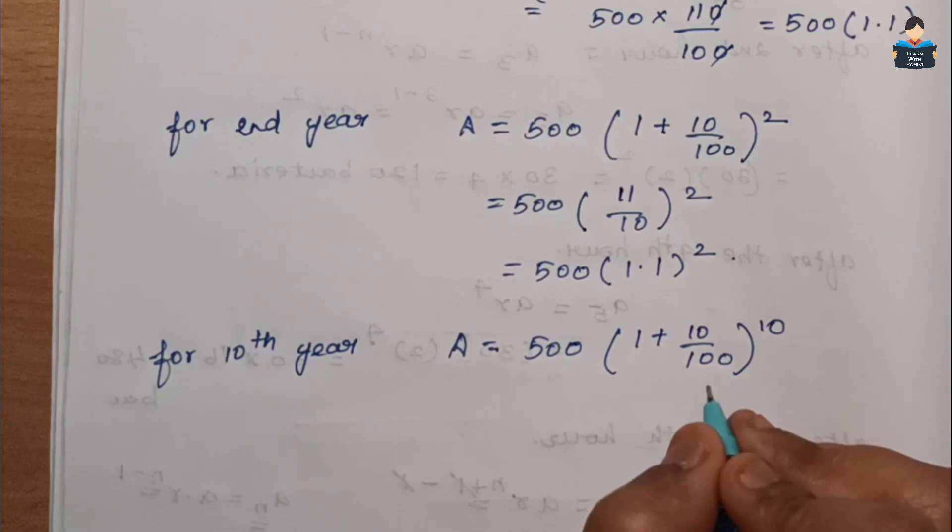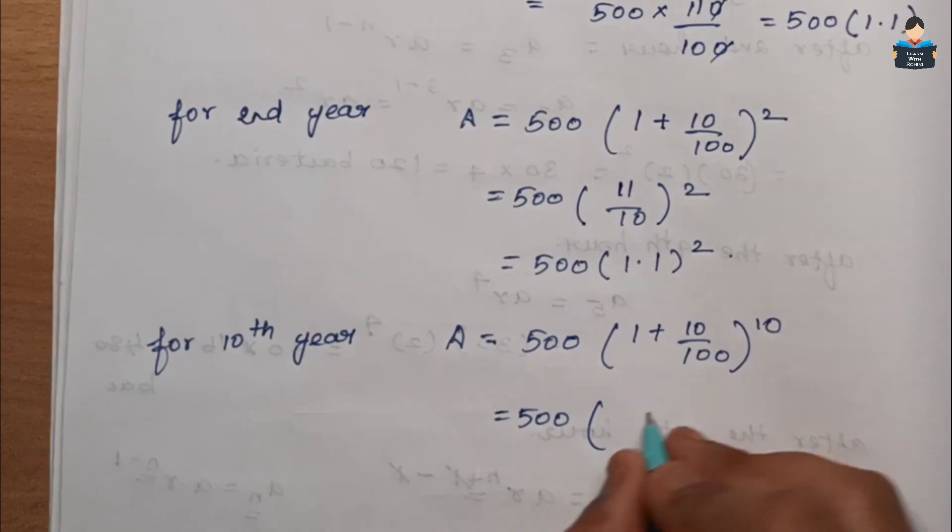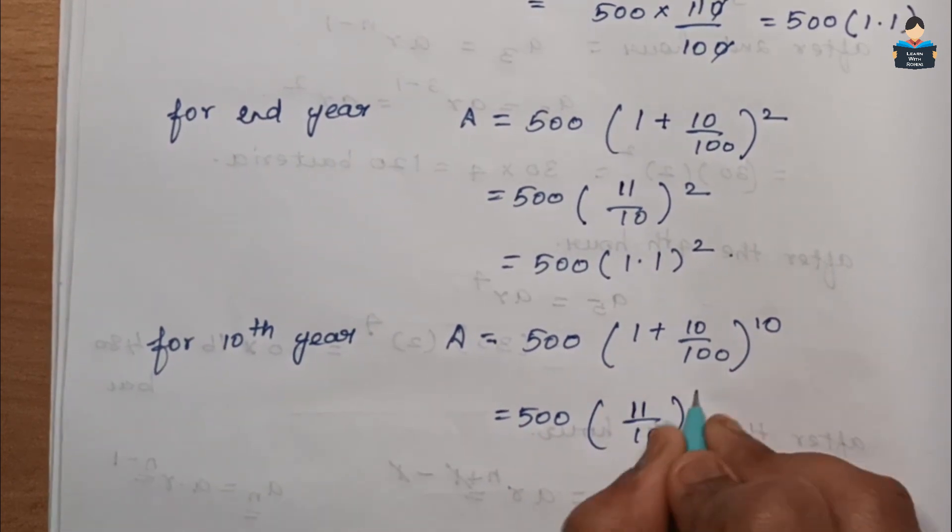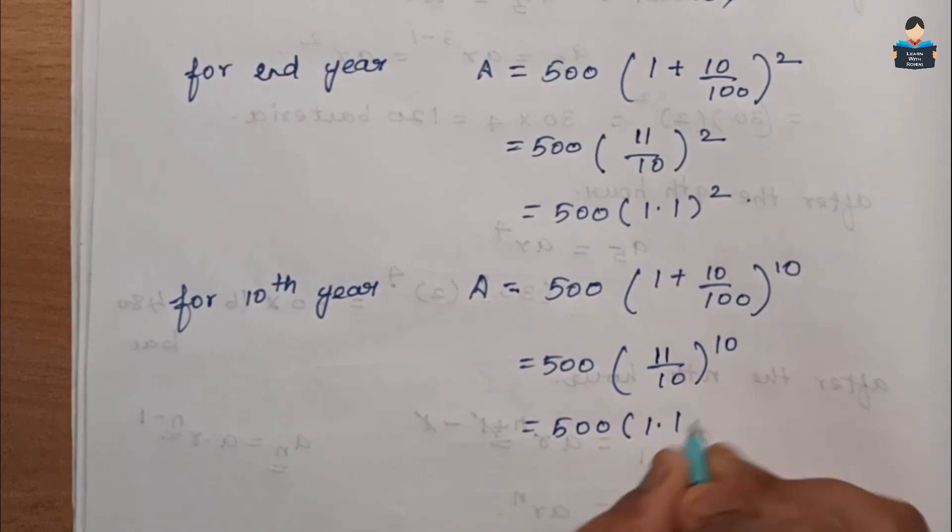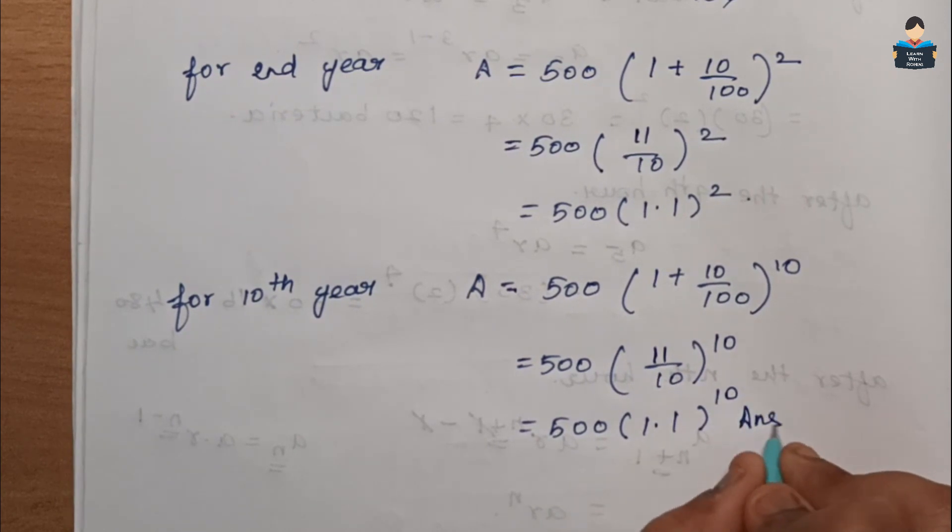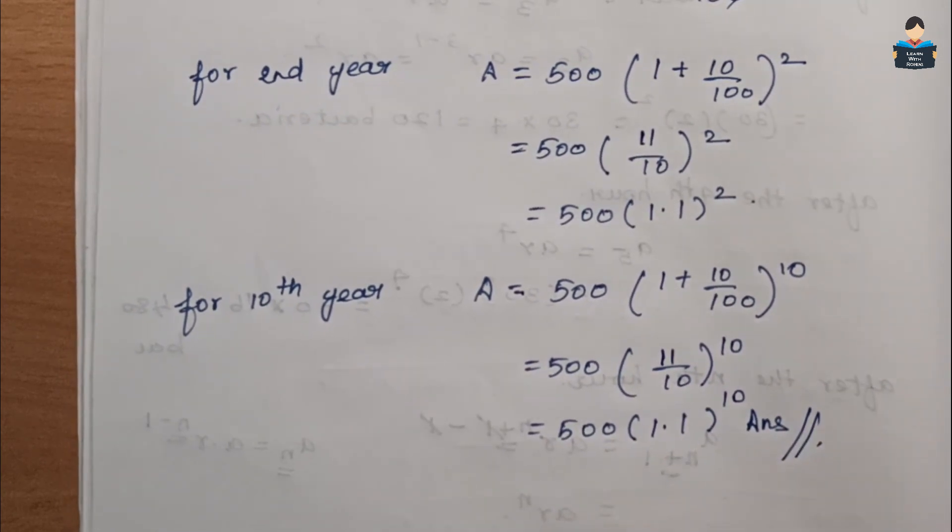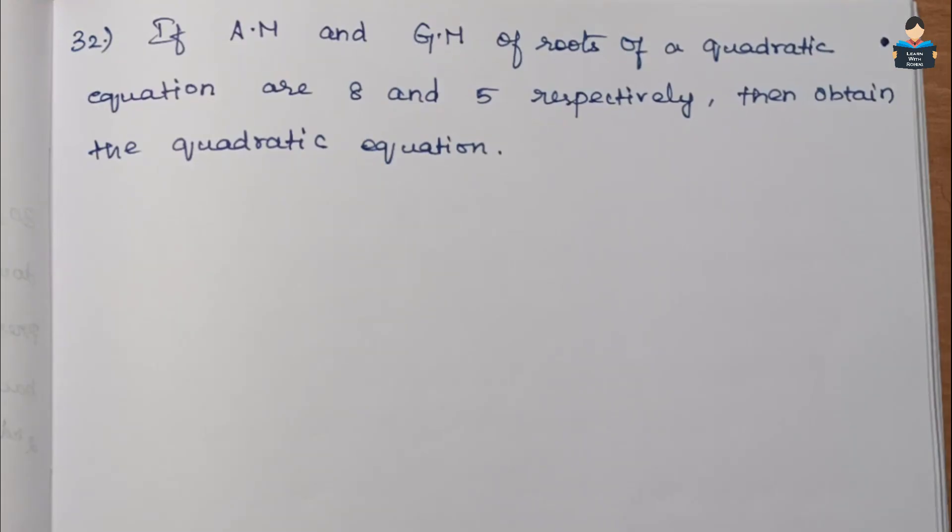For the 10th year, the amount equals 500 times (1 plus 10 by 100) to the power 10.